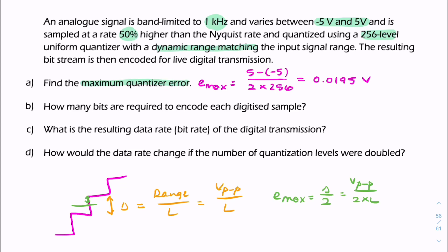Second question, how many bits are required to encode each digitized sample? That's just another way of asking for the bit depth, N. So N is simply log to the base 2 of L. L being the number of levels, in this case 256. So that gives us 8 bits.